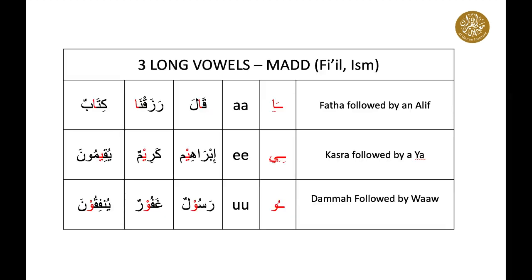Let's talk about long vowels. Long vowels in Arabic are used in two types of words or kalima, and they are fi'il or ism. The long vowels in Arabic are a, e, u. They are written by using three of the letters in the Arabic alphabet: the letter alif is used in the long vowel 'a,' the letter ya is used in the long vowel 'e,' and the letter waw is used in the long vowel 'u.'